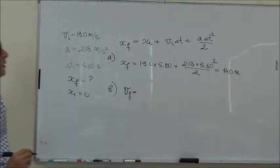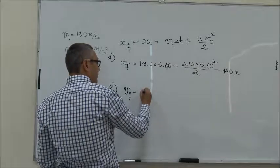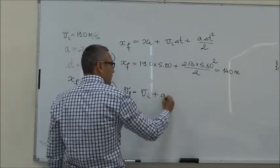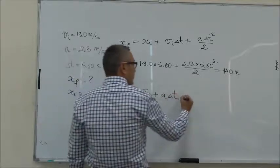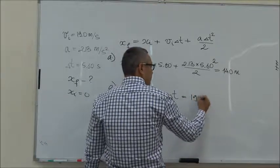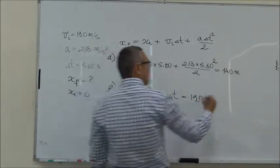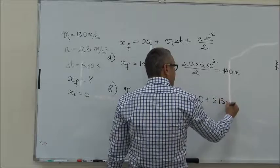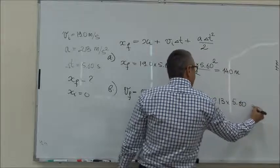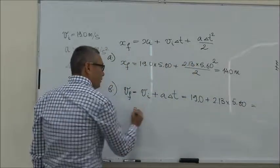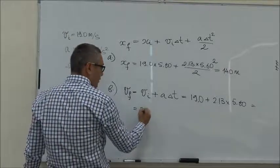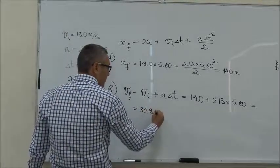V final is related to V initial as this: V final is equal to V initial plus A delta t. So in our case V initial is 19, A is 2.13, and delta t is 5.6. If you do the calculation, the value that you get is 30.9 meters per second.